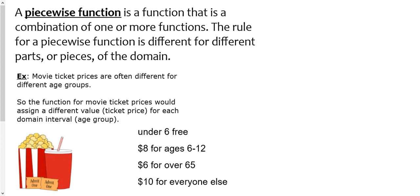A great example of a piecewise function is movie ticket prices. Typically movie ticket prices are different for different age groups. A piecewise function is any function that is a combination of different functions where it's different depending on different domains, or different parts or pieces of the function. Hence the term piecewise function.